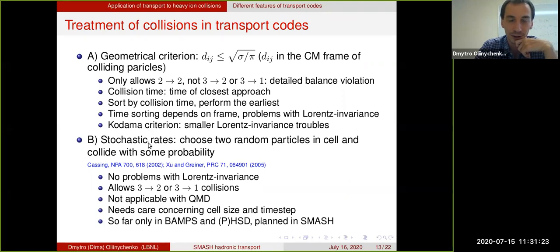There is also a different way to approach collisions. Instead of treating them deterministically, there is a stochastic way. You just take the cell, you choose two random particles and say these particles are going to collide with some probabilities. In this way you can do everything completely Lorentz invariant. This allows three to two collisions and three to one collisions. In general, I would say the stochastic rates method is superior to geometrical criterion. In SMASH it is already implemented on one of the branches, so it's not just planned, it's actually being implemented right now.